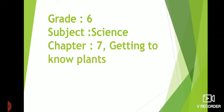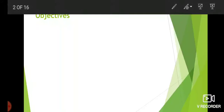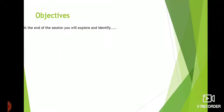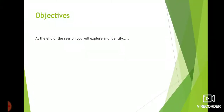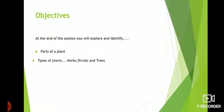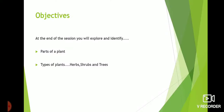Grade 6 Science, Chapter 7: Getting to Know Plants, Module 1. Objectives: At the end of the session, you will explore and identify the parts of a plant and the types of plants — herbs, shrubs, and trees.